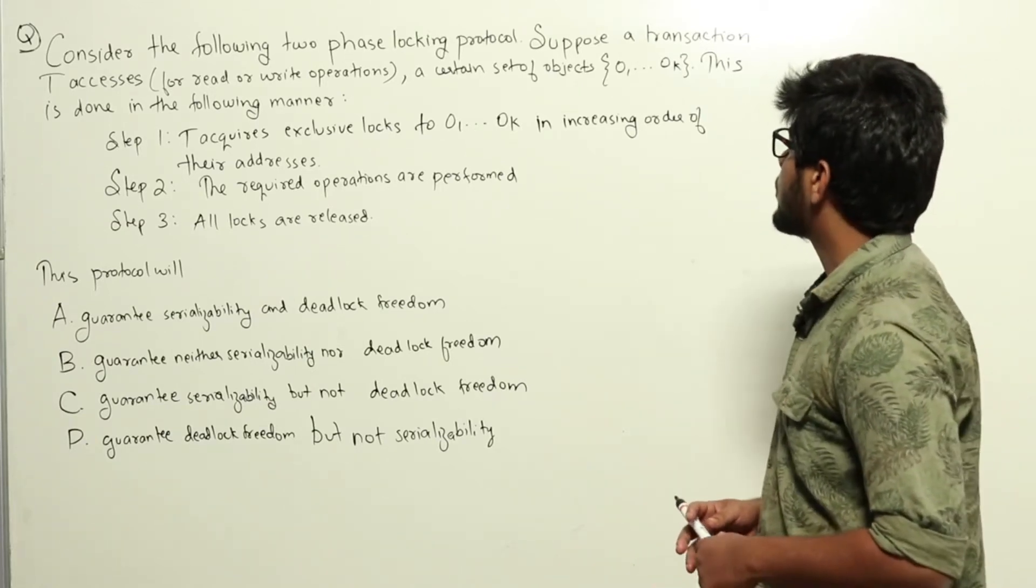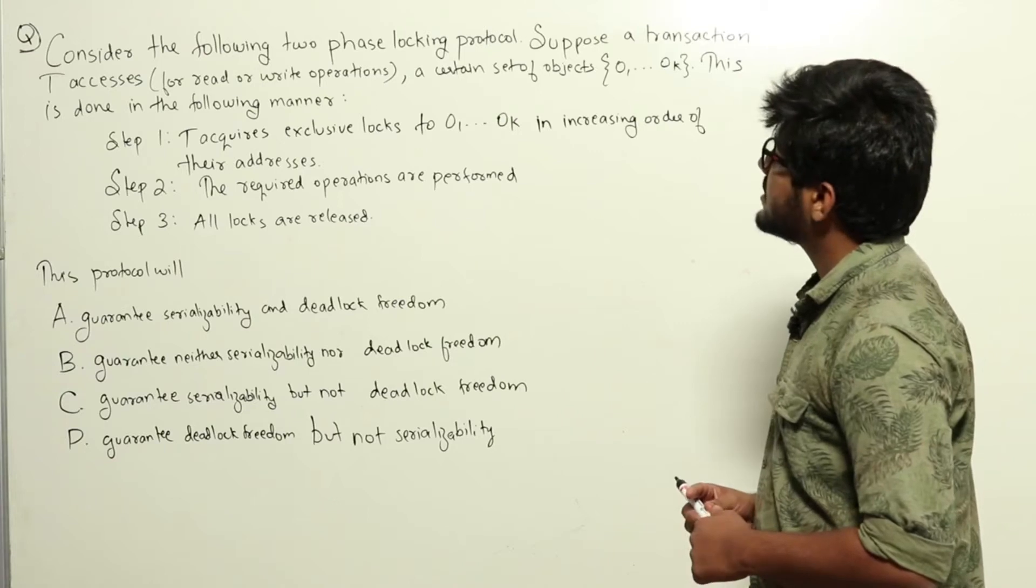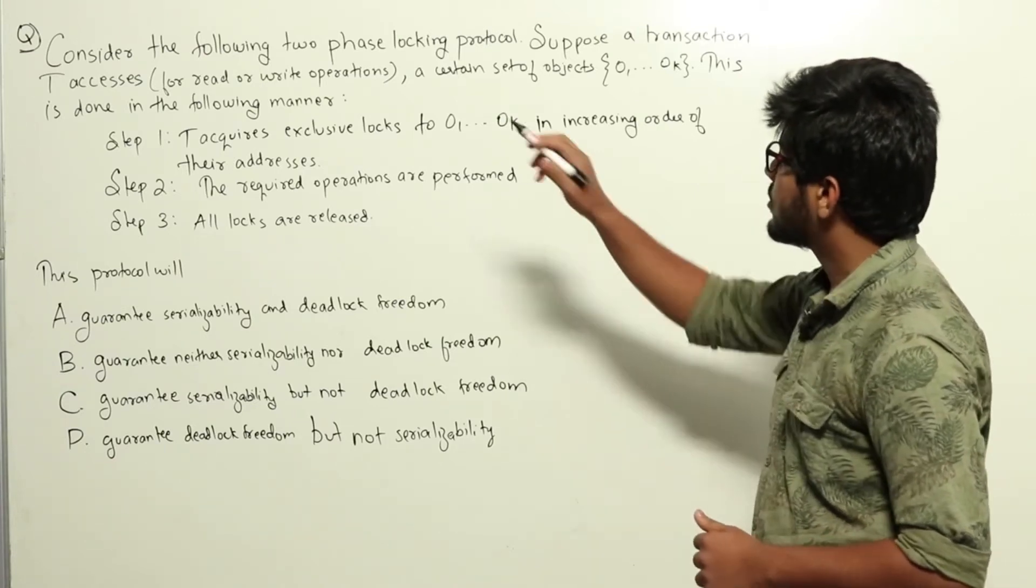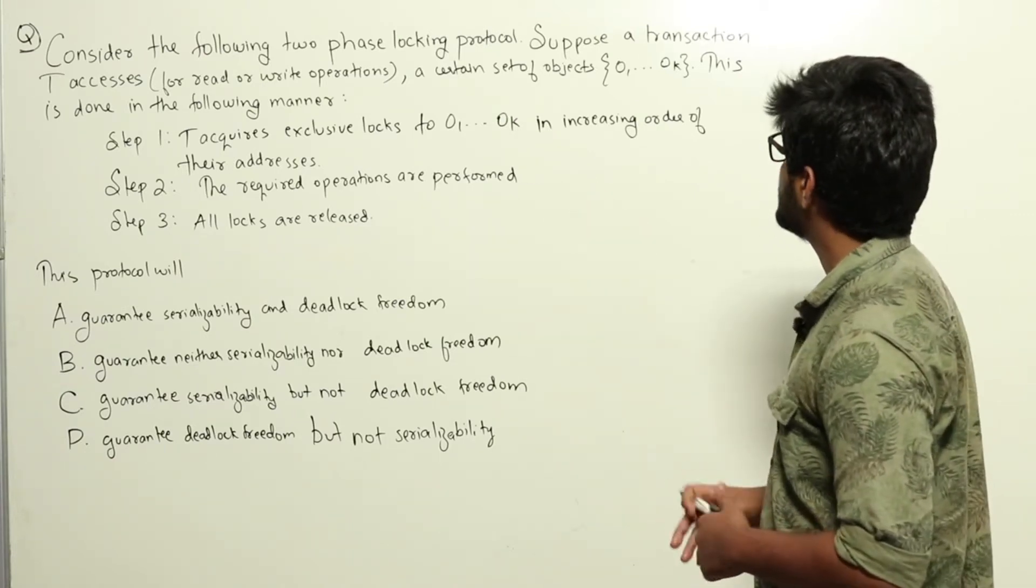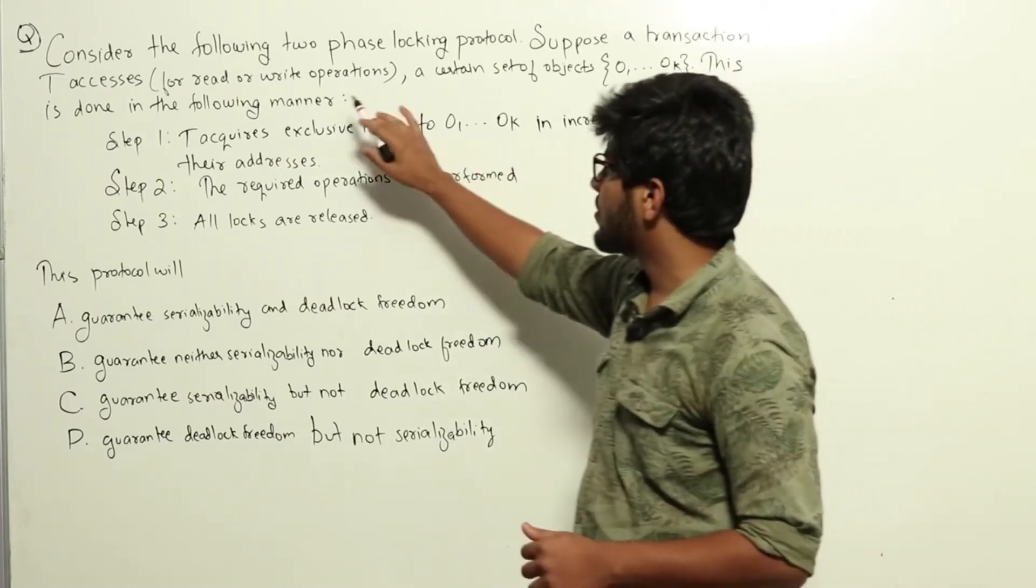Consider the following two-phase locking protocol. Suppose a transaction T accesses, for read or write operations, a certain set of objects O1 up to OK. This is done in the following manner.